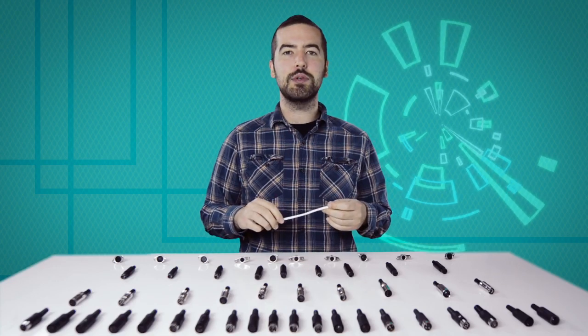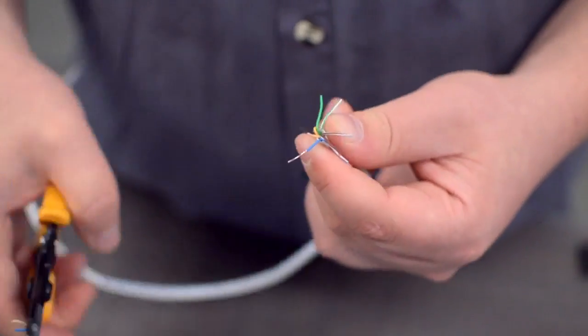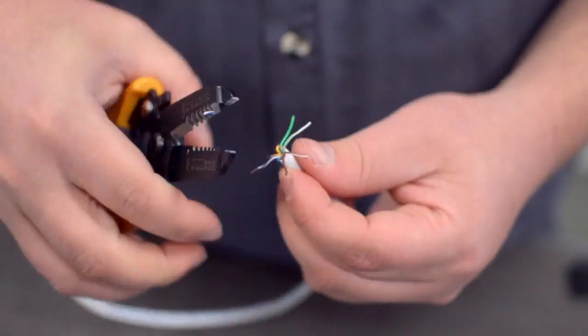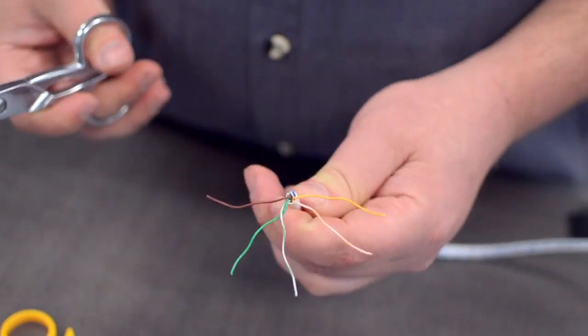For this example, we will be using CAT 5E cable. You will also need to strip the individual conductors. Trim off any additional conductors if needed.